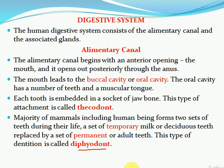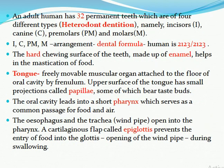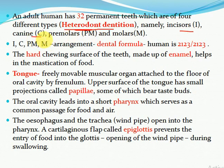Our teeth are also heterodont. Dentition means the arrangement of teeth. Heterodont means 'hetero' — different — so different types of teeth are present. Our teeth are not all similar; there are different types: incisors, canines, premolars, and molars. The total number of teeth is 32.